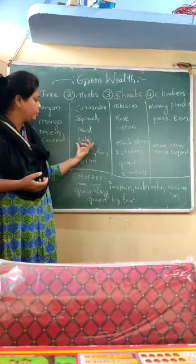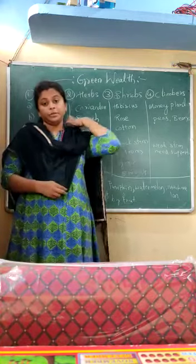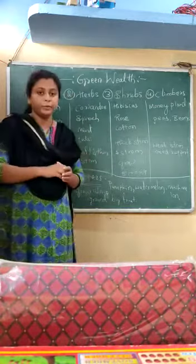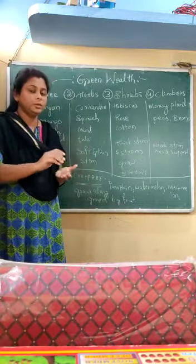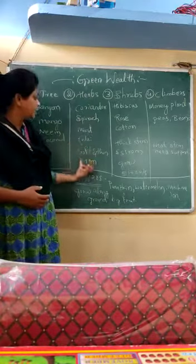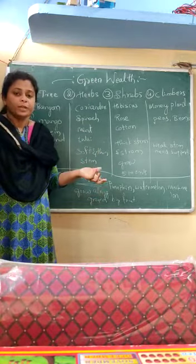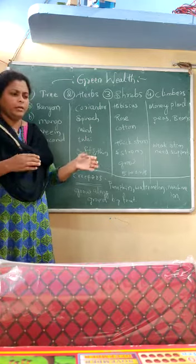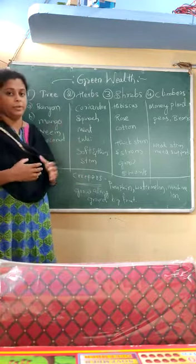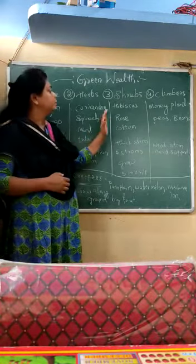These herb leaves - like spinach and coriander - are used for medicinal purposes, meaning in preparing syrups, tablets, perfumes, and even soaps. Tulsi and spinach are some examples. They are not too weak or thin, but they are not as strong as trees either - they have soft and thin stems.